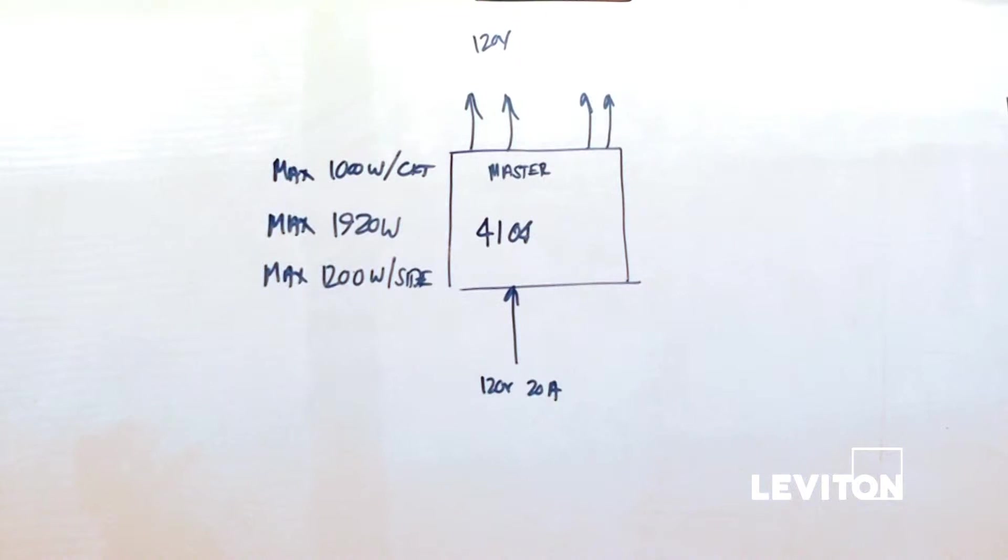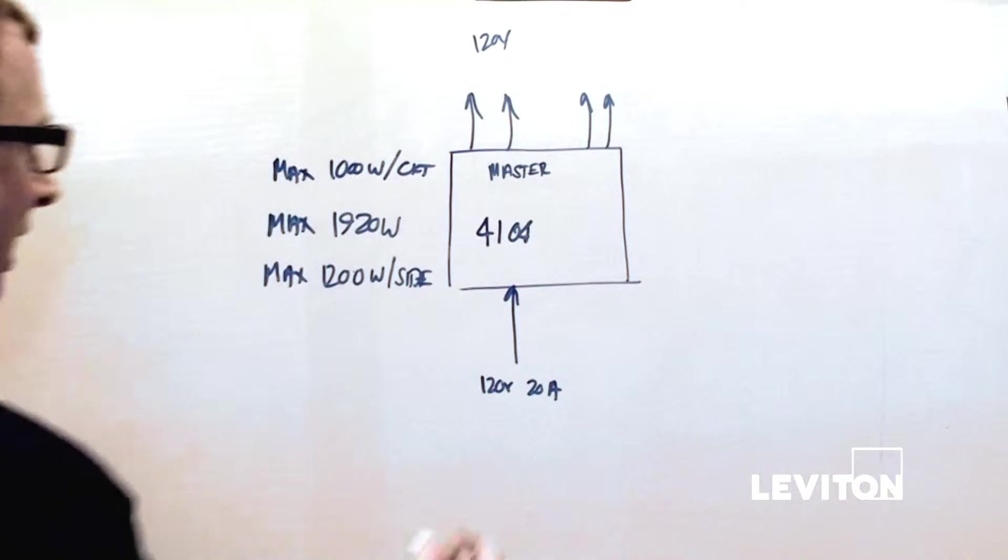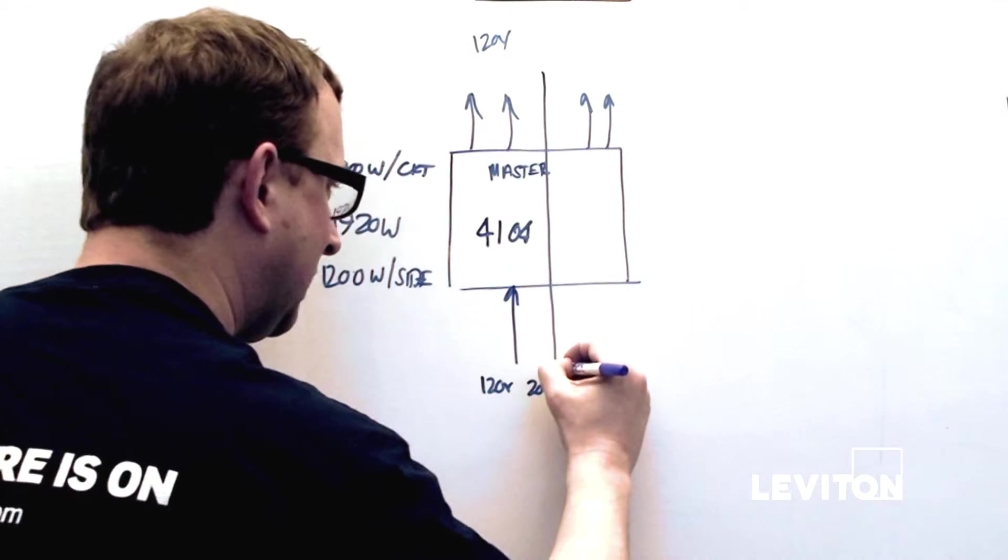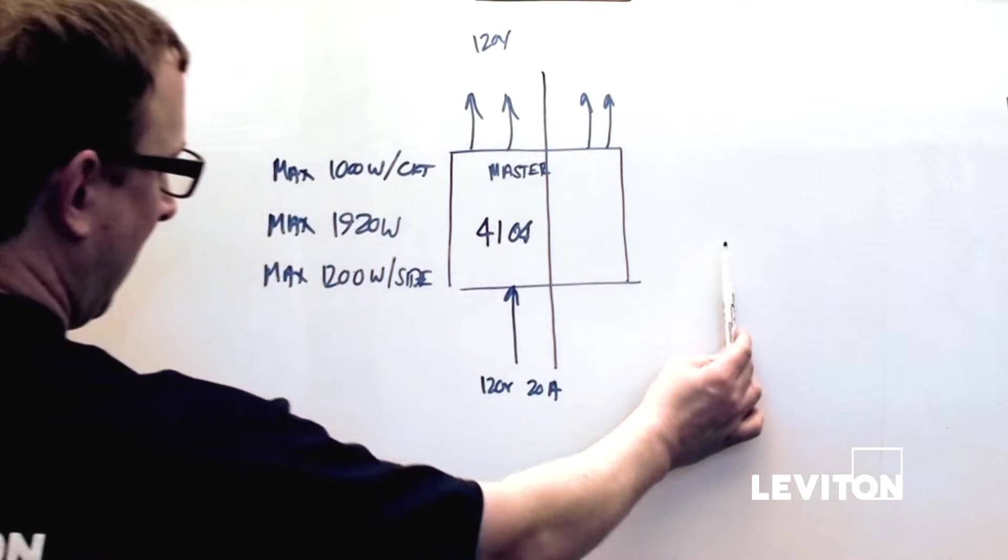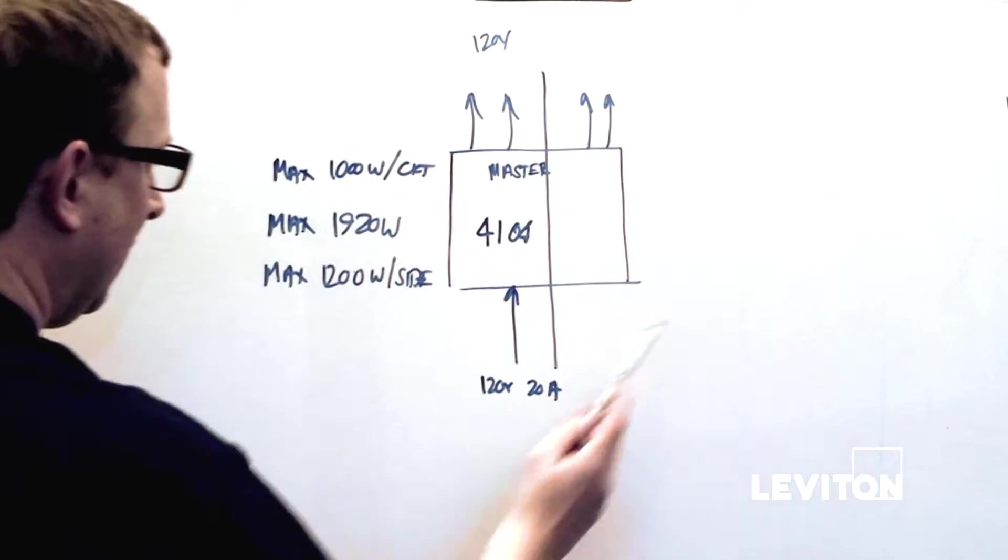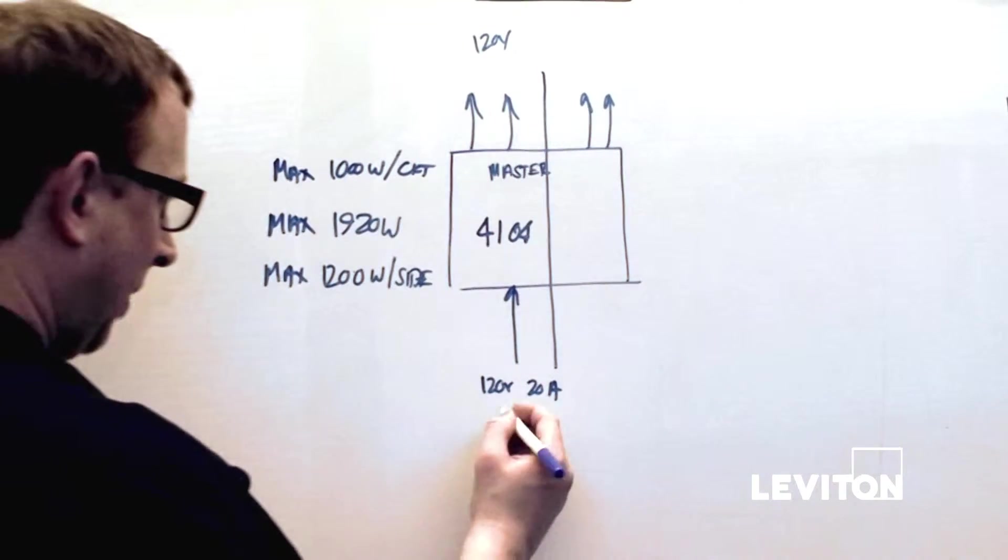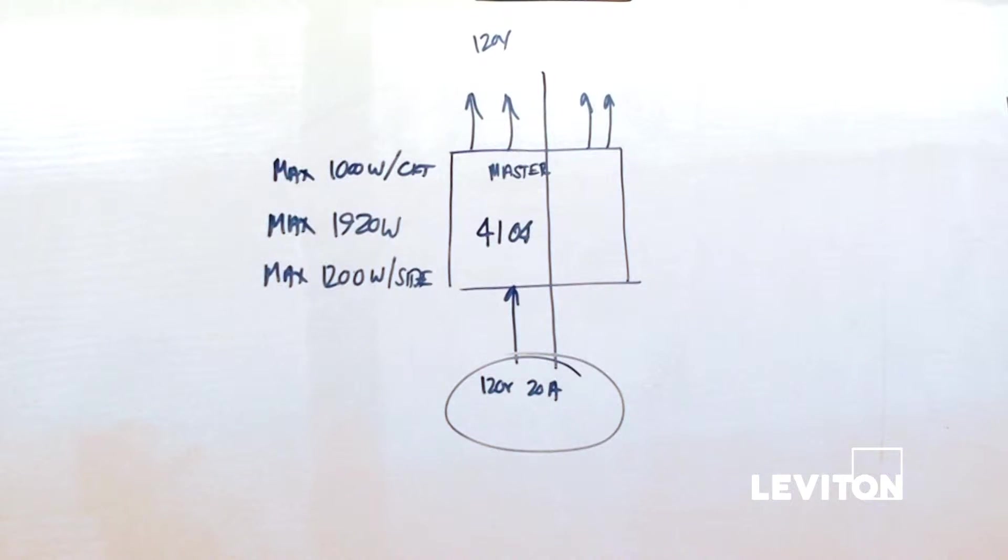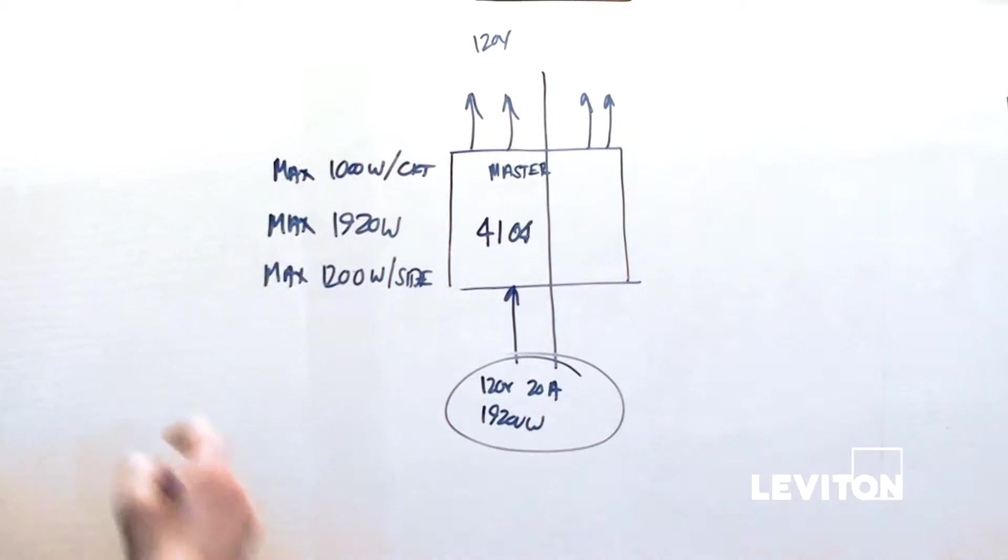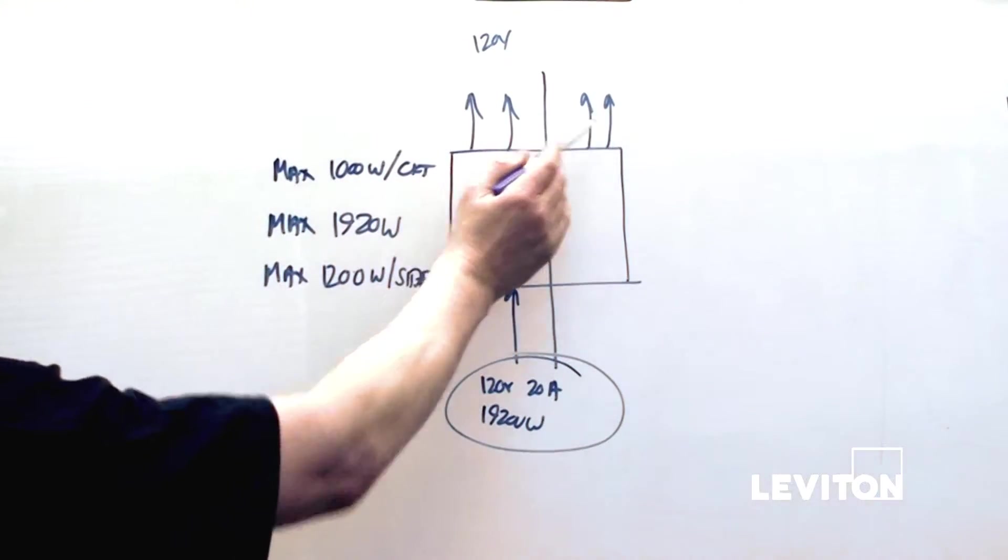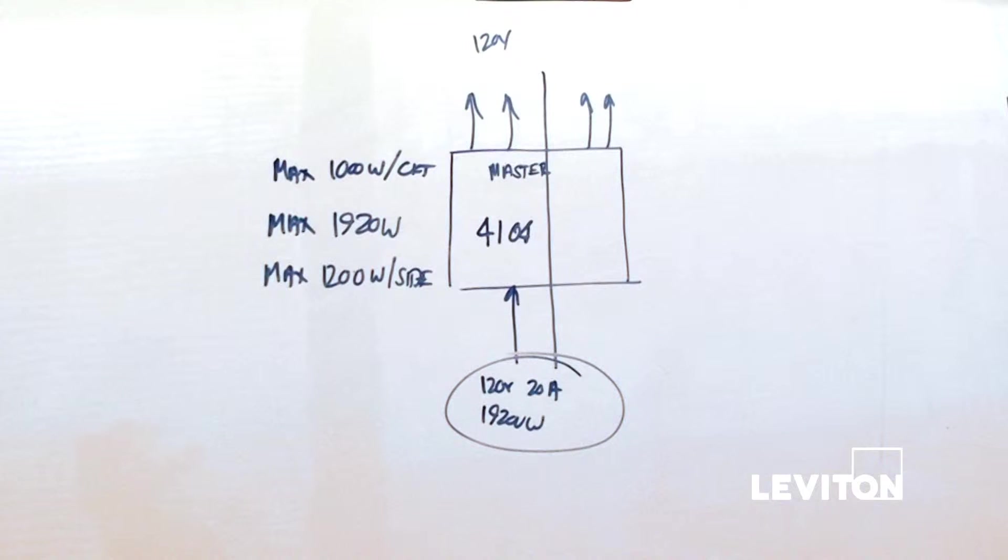If you look at the back of the device, you'll know that there's output dimmers on the left and the right side. What we mean by saying each side is the left side cannot exceed 1200 watts, the right side cannot exceed 1200 watts. This 1920 watts max means you're never going to see more than 1920 watts coming in the input. The per dimmer rating says that each one of these devices here cannot exceed 1000 watts each. So the smallest system would be just a single master station with power coming in and power coming out.